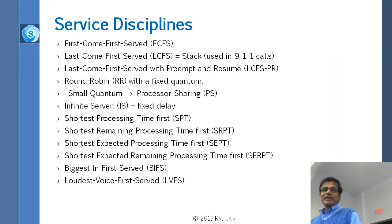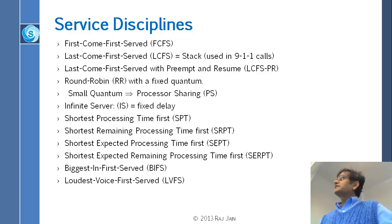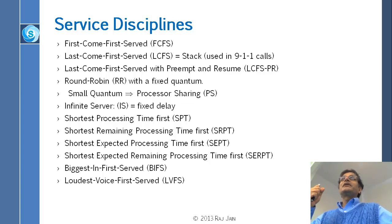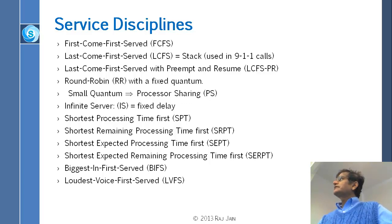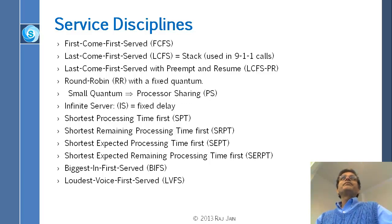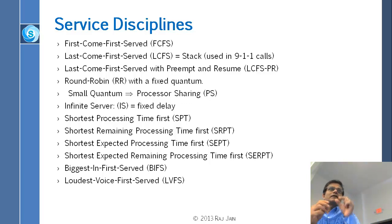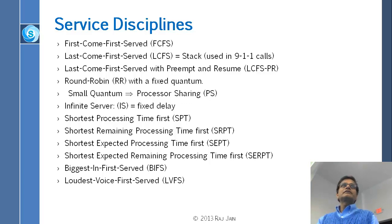The service discipline: most commonly it is first come first served, FCFS. Sometimes it is last come first served, like in a stack or in 911 calls — what is happening right now is more important than what happened 10 minutes ago. There is also LCFS with preempt and resume — preempt means you stop what you are doing and handle the new thing; when done, you go back. Then round robin — you cycle through in a round. With a very small quantum like one millisecond, that becomes processor sharing, which looks like continuous service.